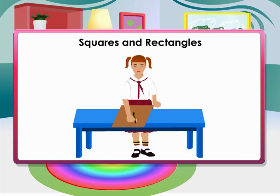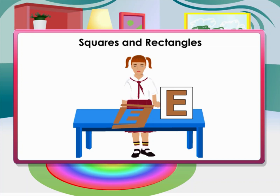Divya decided to make the alphabet letter E using square cardboard. She drew the letter E on the cardboard and started cutting according to the shape of the letter E. After cutting the shape, she had a doubt: has the perimeter of the cardboard increased or decreased?